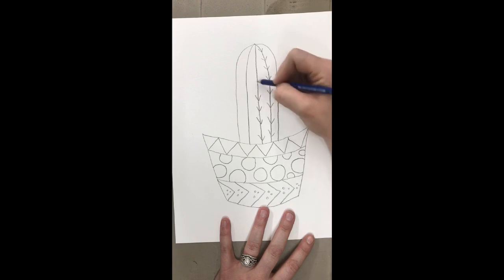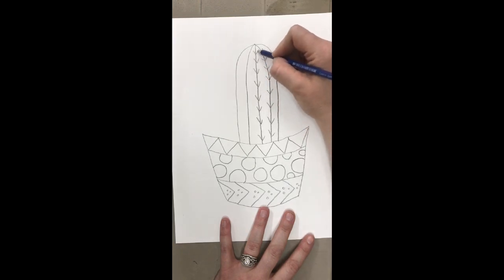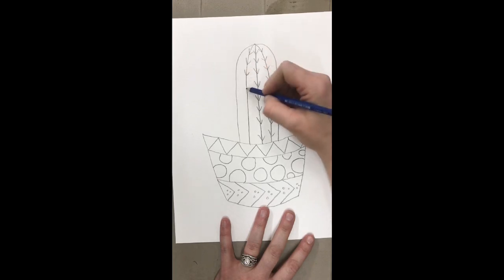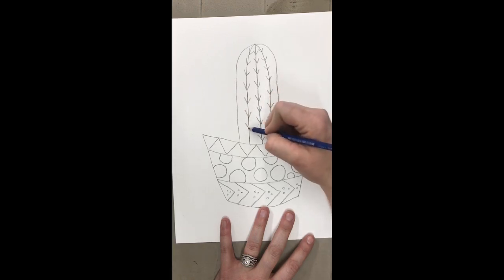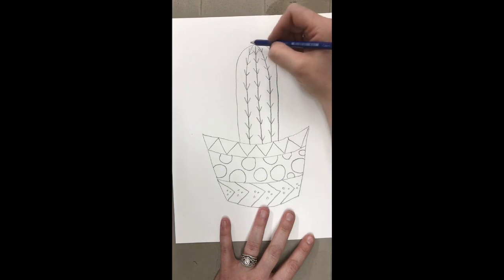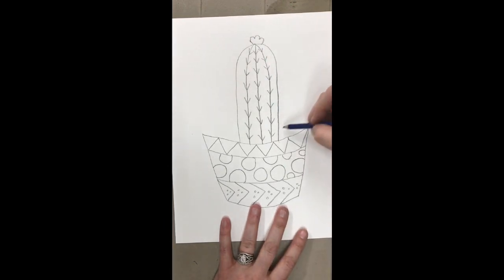And once again, you should be drawing light until you get it right, that way if you need to erase you can. I'm drawing a little darker than normal just because that way you guys can see it on the camera. Otherwise, if I draw really light, it's kind of hard to see what I'm doing. Okay, now you can use one of the cactuses from the board or you can come up with your own.